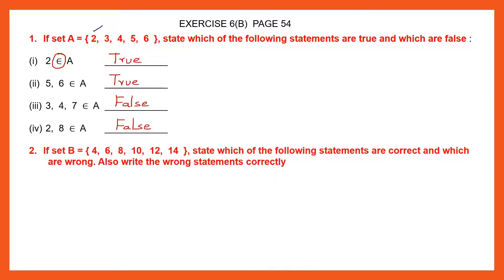Question 2. If set B has all these elements: 4, 6, 8, 10, 12 and 14, state which of the following statements are correct and which are wrong. Also write the wrong statements correctly. So we've been given the elements of set B and a few statements. We have to say which is correct and which is wrong, and if it is wrong, we have to correct the wrong statement.